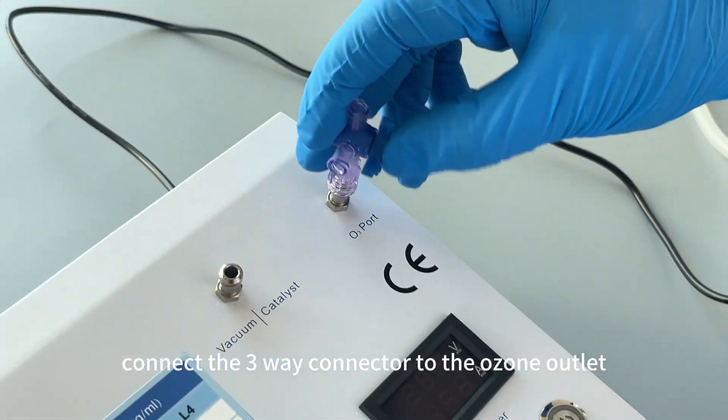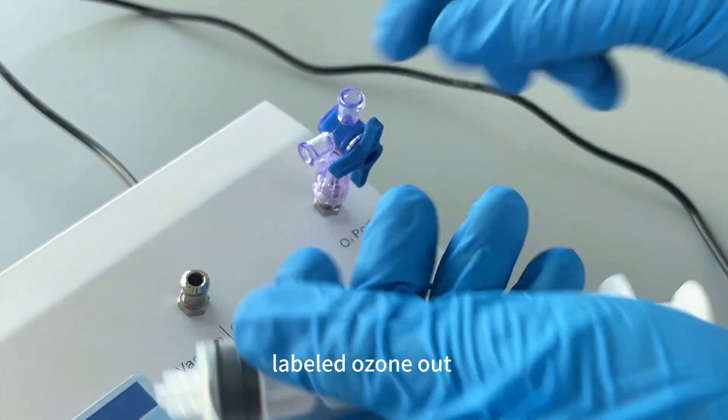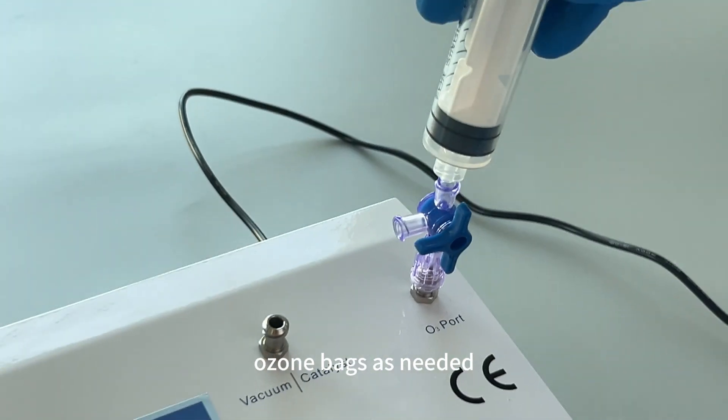Connect the three-way connector to the ozone outlet labeled as Ozone Out. Attach the direct outlet of the three-way connector to the syringe or ozone bags as needed.